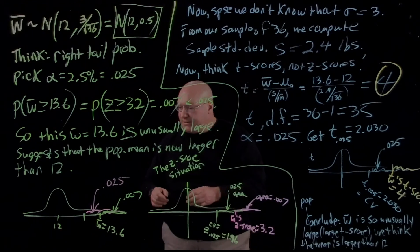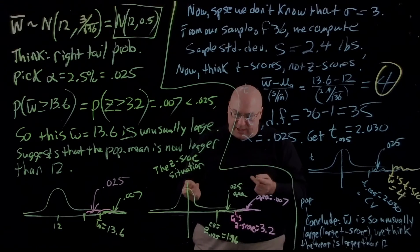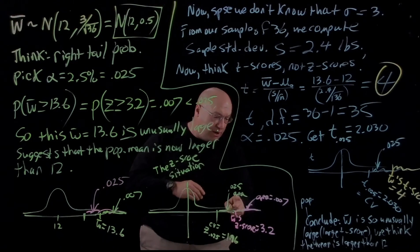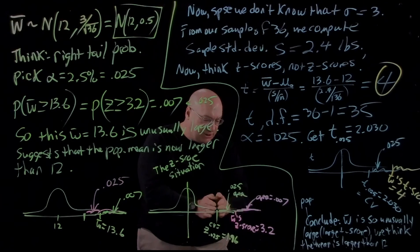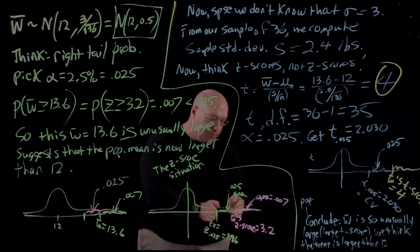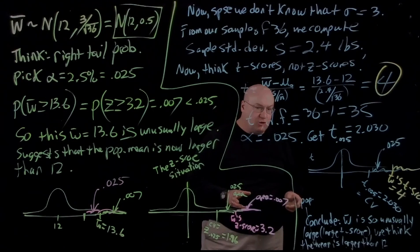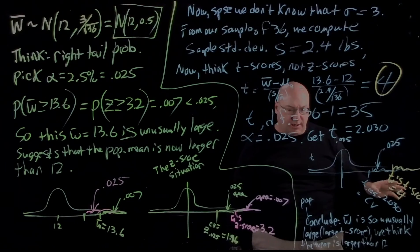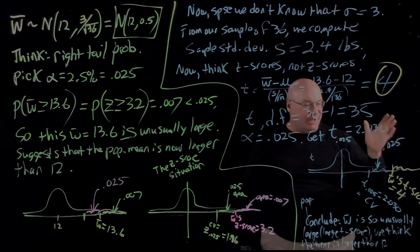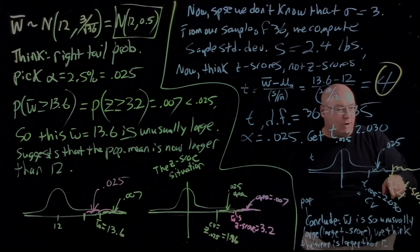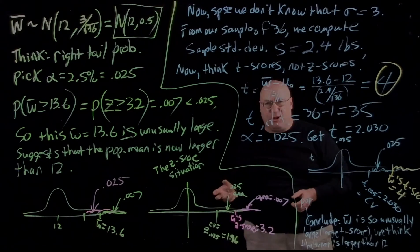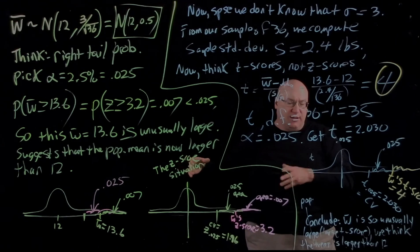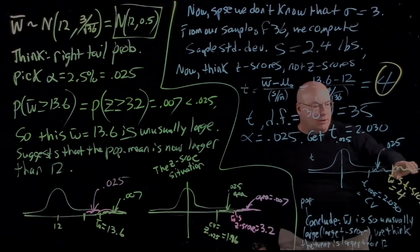Notice something real quick here. Over here, because I could look up all kinds of Z scores, I'm able to do this problem in two different ways. I can think in terms of comparing areas—W's Z score has an area that's a lot smaller than the cutoff area. Or I can just look at the Z scores themselves. W bar's Z score is so far out, it's beyond the Z score of the critical value. So either way, I can see that W bar is unusually large. Over here, I can compute W bar's T score. It's bigger than the cutoff T score, so that's enough for me to conclude that W bar is unusually large. But I can't really compare areas.